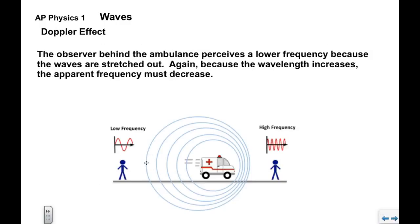The observer behind the ambulance perceives a lower frequency because the waves are stretched out. You can see here behind the ambulance the wavelengths are greater than they would be if the ambulance were standing still. And again because V equals F lambda and the V is unaffected, the wavelength increases so the apparent frequency must decrease. So in contrast, this person hears a higher frequency than actual, this person hears a lower frequency than actual.